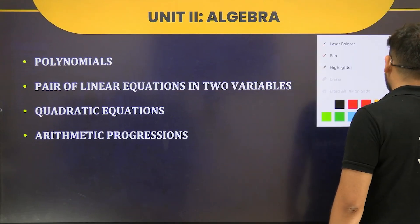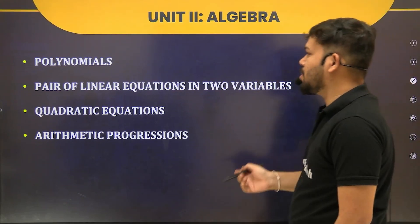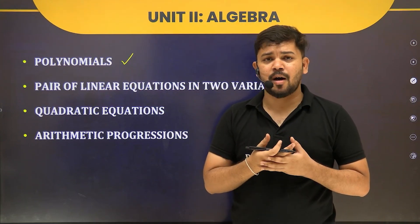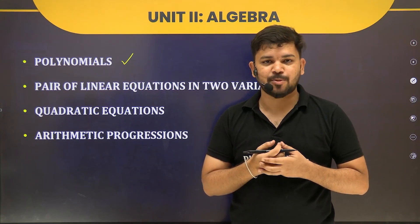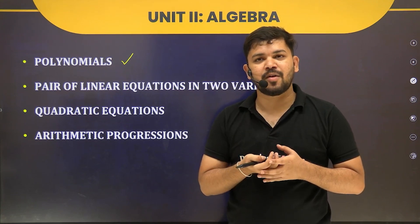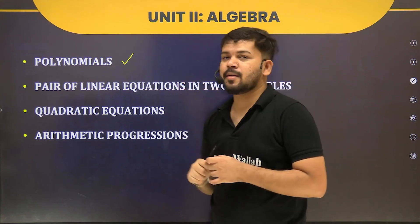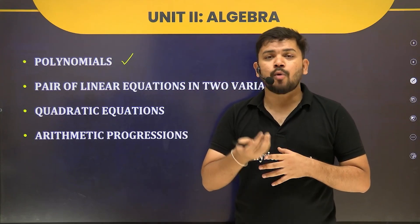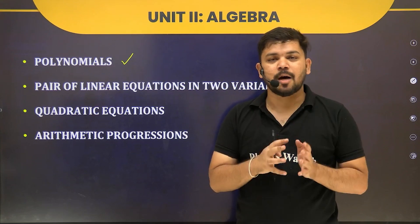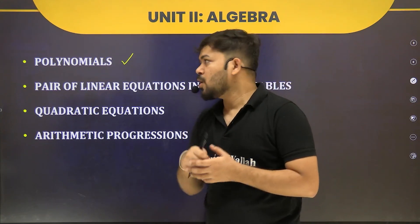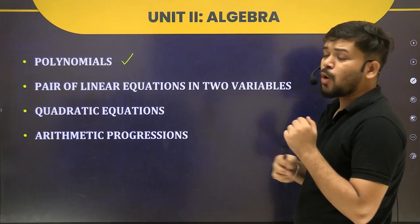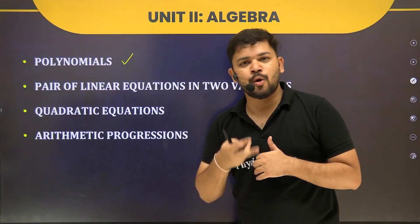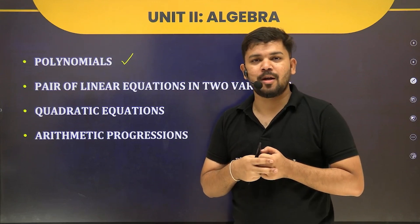Next, in Algebra, polynomials will be covered. Polynomials are a continuation of algebraic expressions from your previous grade. We will see in detail what a polynomial means, the different types of polynomials, and how they are classified based on terms, degree, and variables. We will also cover what zeros of a polynomial mean and how to find them graphically.